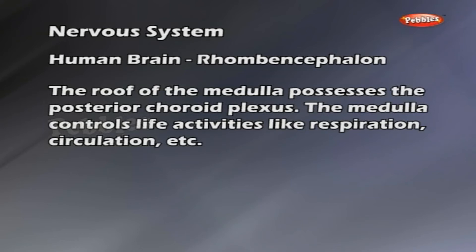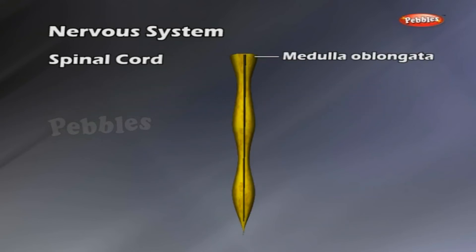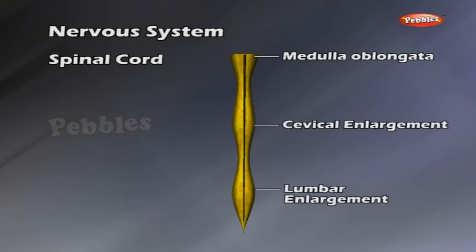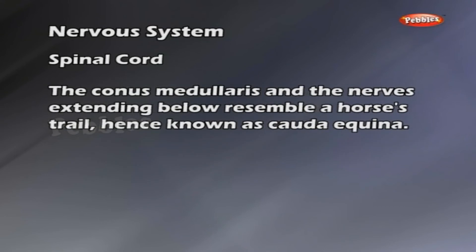Brainstem: The medulla oblongata, the pons, and the midbrain constitute the brainstem. Spinal cord is the downward continuation of the medulla oblongata, which lies in the neural canal of the vertebral column up to the level of the second lumbar vertebra. There are two enlargements in the spinal cord: the cervical and lumbar enlargements. Below the lumbar enlargement, the spinal cord tapers to form the conus medullaris. A connective tissue filament, the filum terminale, extends from the conus medullaris to the last vertebra, coccyx. The conus medullaris and the nerves extending below resemble a horse's tail, hence known as cauda equina.